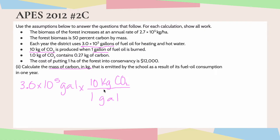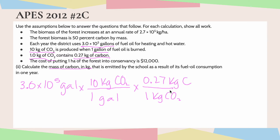Now I'm close, but I still have to get to carbon. Looking at my next given, I know that 1 kilogram of carbon dioxide contains 0.27 kilograms of carbon. So for every 1 kilogram of carbon dioxide, there are 0.27 kilograms of carbon. Now let me check everything and cancel out my units. Gallons cancels with gallons — they're diagonal. Kilograms of carbon dioxide cancels with kilograms of carbon dioxide. And now I'm in kilograms of carbon, which is exactly what I wanted.